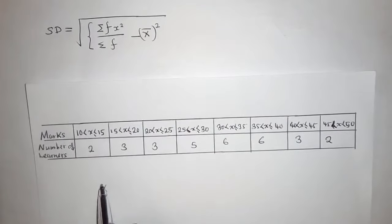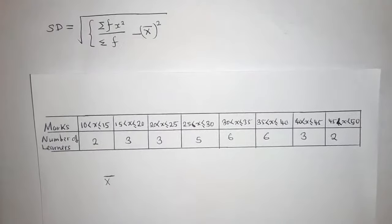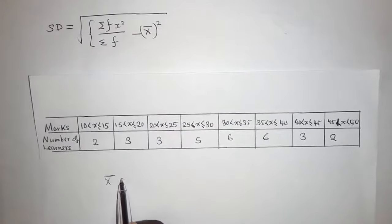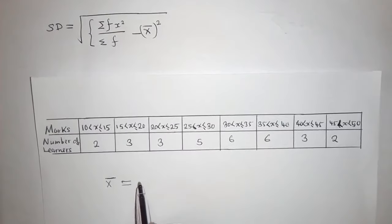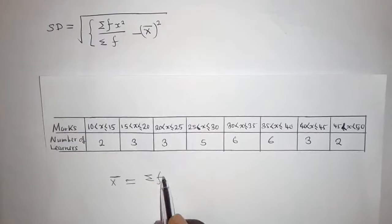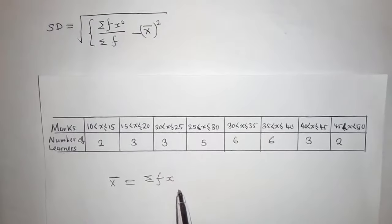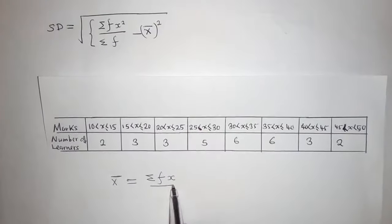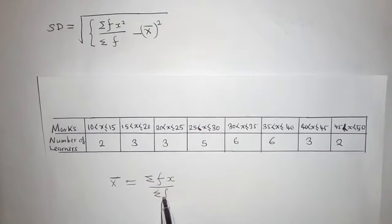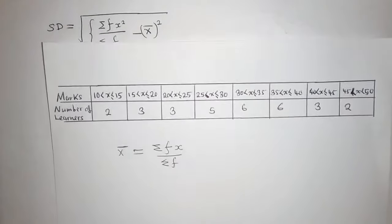This symbol means we are finding mean. The formula for finding mean is equal to the summation of frequency multiplied by the midpoint over the summation of the frequency. This formula is given.